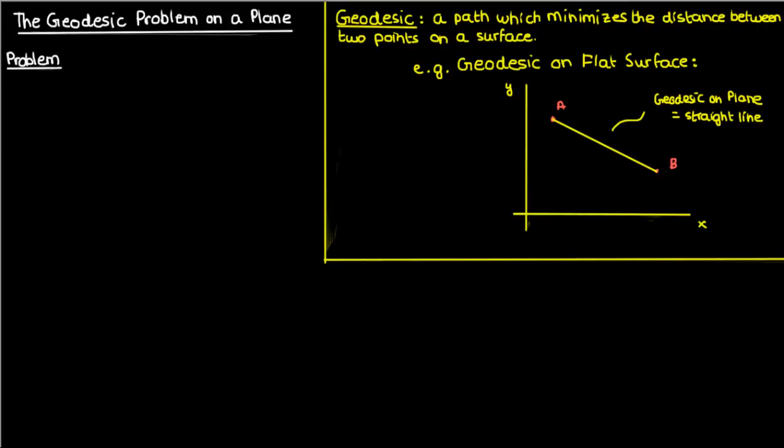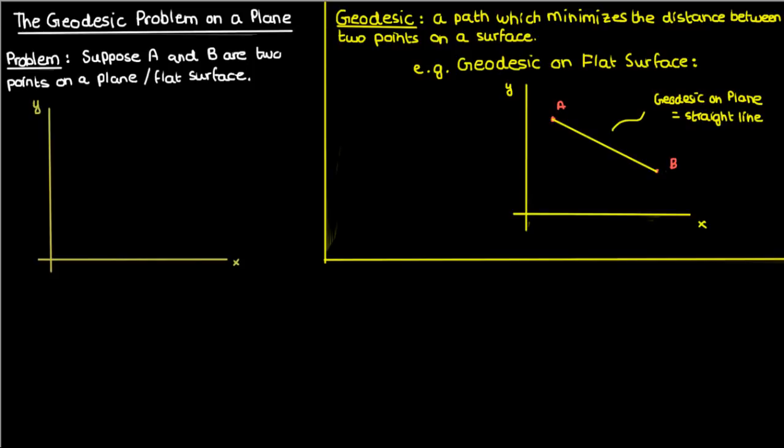We'll start by writing the problem statement. So suppose we have two points A and B on a flat plane surface. The coordinates of A and B are described by the typical Cartesian coordinate system, so A is going to be (x1, y1) and B is going to be (x2, y2).